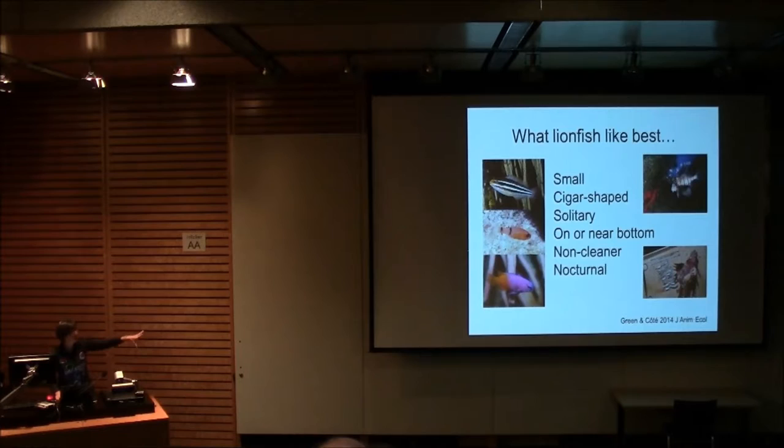And interestingly, the same combination of characteristics turned out to be important, whether we were simply comparing what lionfish were eating in visual observations compared to what was available to them when they were hunting, or when we were comparing what they had in the stomach to what was available to them on the reef scale. So on these two scales, the same characteristics popped out as characteristics of preferred lionfish prey. And species that have all six of these characteristics are 200 times more likely to be eaten by lionfish than species that don't have any of these characteristics.